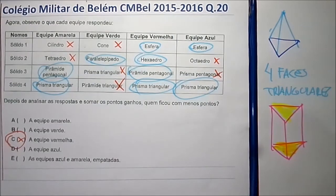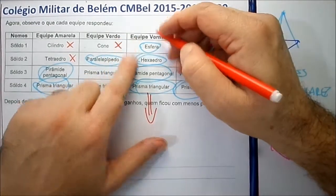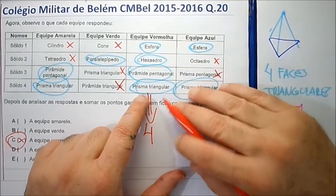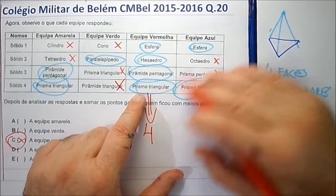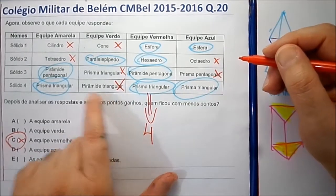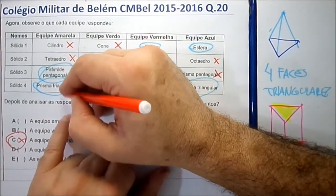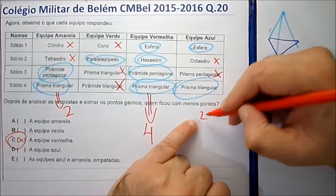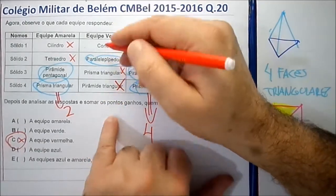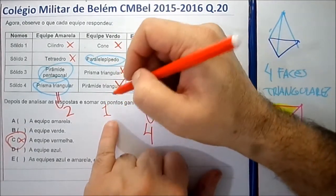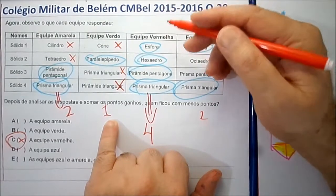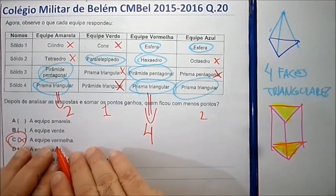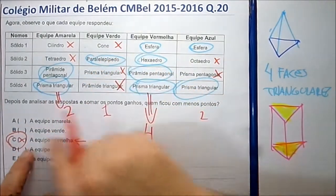A equipe vencedora absoluta foi a equipe vermelha, porque fez quatro pontos, acertando todas as perguntas. Em segundo lugar empatadas ficaram a equipe amarela e a equipe azul, com dois acertos cada. A equipe verde ficou em último lugar com apenas um acerto, precisando estudar mais geometria. Resposta correta: letra C.